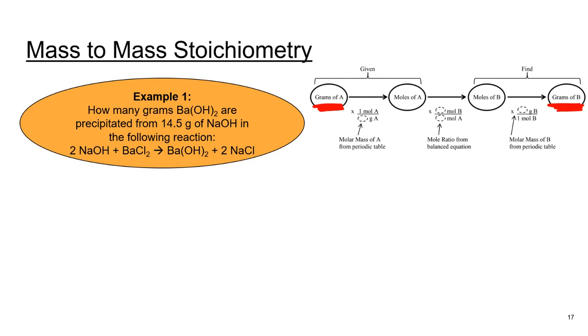Our problem says how many grams of barium hydroxide are precipitated from 14.5 grams of sodium hydroxide. So let's start off with 14.5 grams of sodium hydroxide as the known. We like to put that number over one so we don't accidentally put something else in the denominator. I'm going to bring down my units, grams of sodium hydroxide.